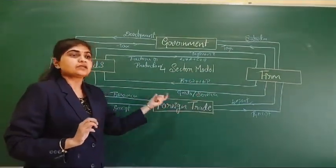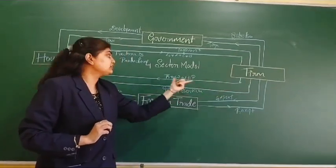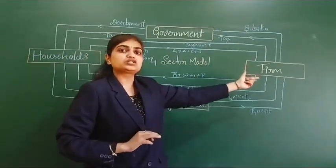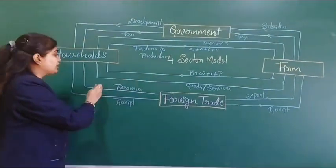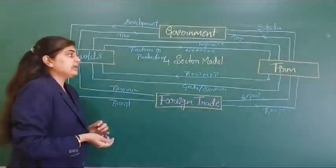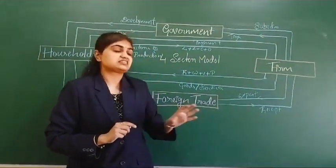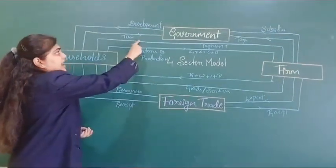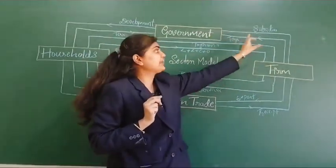Let me recap. Households provide land, labor, capital, and organization to the firm. In return, firms give rent, wages, interest, and profit. By using factors of production, firms manufacture goods or services and send them to households. In return, households make a payment. Additional resources left with households are exported to foreign countries; in return, they get a receipt. Similarly, firms export remaining goods or services to foreign countries and get a receipt. Ultimately, households pay tax and receive development from the government, while firms pay corporate tax and receive subsidies.